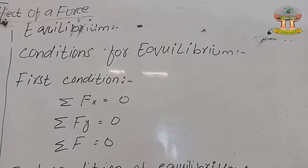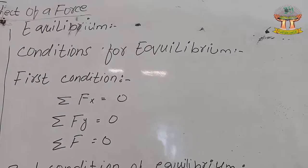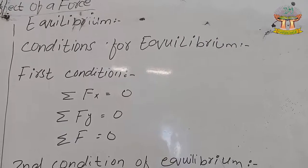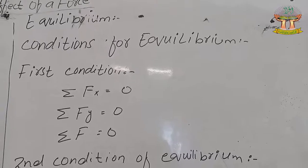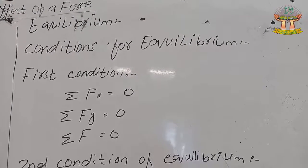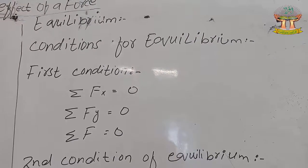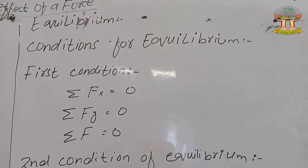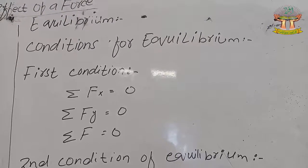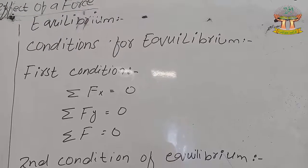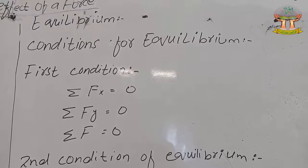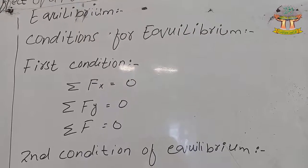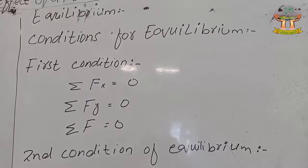Our next topic is equilibrium. A body is said to be in equilibrium if the body is at rest or moving with uniform velocity. The first condition of equilibrium states that the algebraic sum of all the forces acting along the x-axis must be zero, and the algebraic sum of all the forces acting along the y-axis must also be zero.